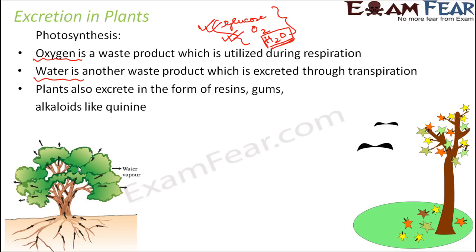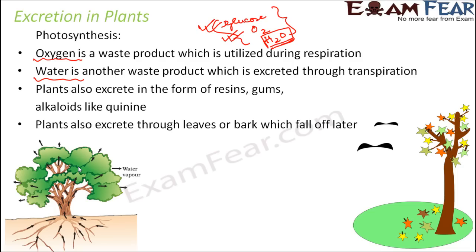Plants also excrete in the form of resins, gums, and alkaloids like quinine. These are different ways plants excrete their waste products. Plants also excrete through leaves or bark which fall off later. During the fall season many leaves fall down, and unnecessary or waste products of the plant are stored in those leaves, which then fall off. So excretion also takes place through leaves or bark that shed over time.